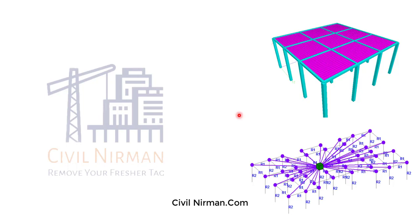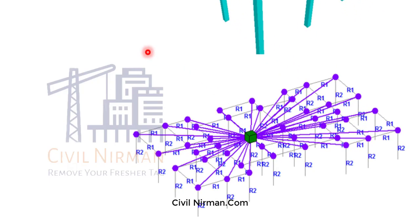The master-slave command is provided to model the in-plane rigidity of the slab. In reality, in RCC structures, when the RC slab is provided, it ties the columns and beam system rigidly. As you can see in the figure, this is the representation of master-slave in STAAD. This system will distribute the lateral force in proportion to the stiffness of the column. At the same time, displacement of all points in the plane of the slab will be the same in the case of master-slave.